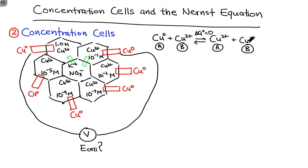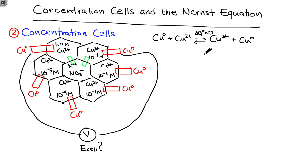The copper zero on the left-hand side becomes copper²⁺ on the right-hand side, and the copper²⁺ on the left-hand side becomes copper metal on the right-hand side. Electrons are actually being transferred, but it's clear from the nature of the reactants and products that the value of ΔG under standard conditions must be zero — the products and reactants are chemically identical. That means the standard cell potential is zero.